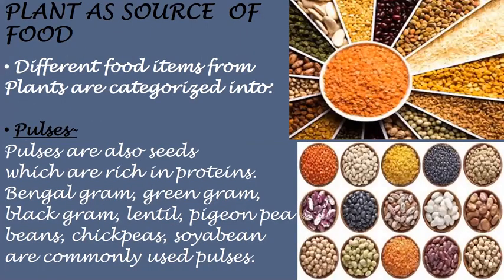The next food item we get from plants is pulses. Pulses are seeds which are rich in proteins. Commonly used pulses are Bengal Gram, Green Gram, Black Gram, Lentil, Pigeon Pea, Beans, Chickpeas, and Soyabean.